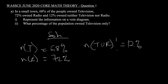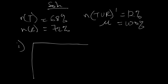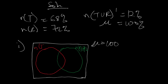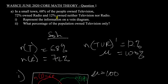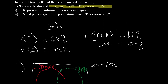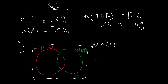To represent the information on a Venn diagram, we have a box representing the total number of people in the town, so the universal set equals 100%. The red circle represents people who own television, N(T) = 68, and the green circle represents people who owned radio, N(R) = 72. The 12% who owned neither are placed outside both circles. We don't know the number who own both television and radio, so we represent that intersection by X.